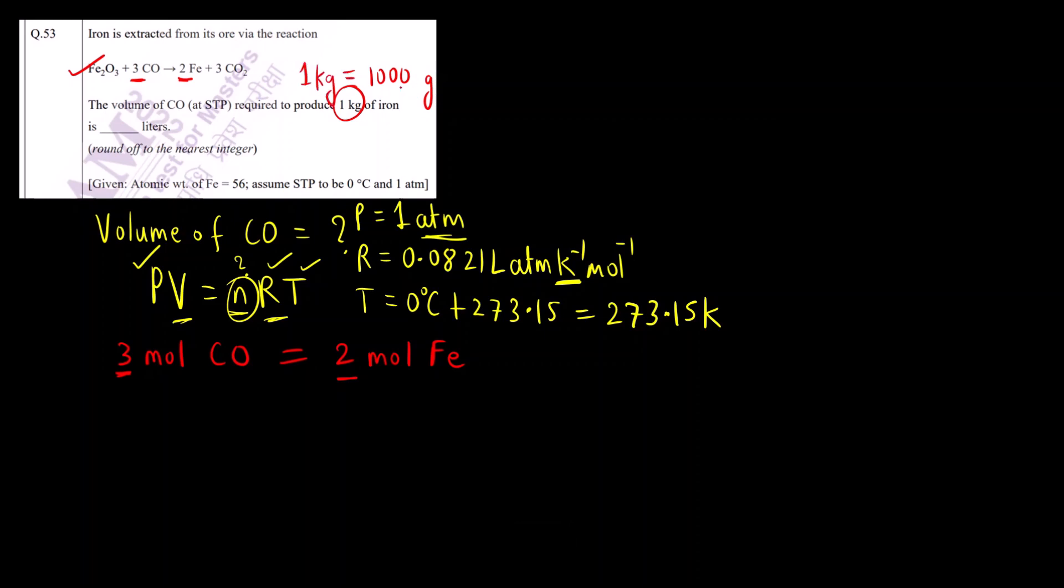Using this mass of iron, we can find out moles of iron. Using moles of iron, we can find out moles of CO. First, I will find out the moles of Fe. How do you calculate moles of any substance? Given mass divided by molar mass. Given mass is 1000 gram divided by molar mass 56 gram per mole. Gram gets cancelled. The moles of iron comes out to be 17.86 moles.